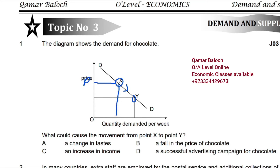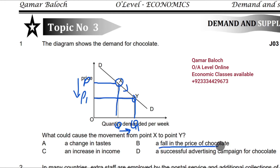Initially price is P and quantity is Q. Due to a decrease in price to P1, quantity has increased to Q1. Whenever quantity demanded increases due to a fall in price, it is called extension in demand, and it happens because of a fall in the price of chocolate.